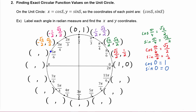The cosine of 5π/6 is negative √3/2 and the sine is positive 1/2. When s equals π, the cosine of π is negative one and the sine of π is zero.